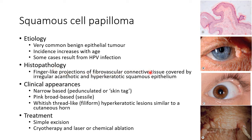Coming to histopathology, histopathology shows finger-like projections of fibrovascular connective tissue covered by irregular acanthotic and hyperkeratotic squamous epithelium. As you can see in this picture, there is fibrovascular connective tissue which is covered by hyperkeratotic squamous epithelium.